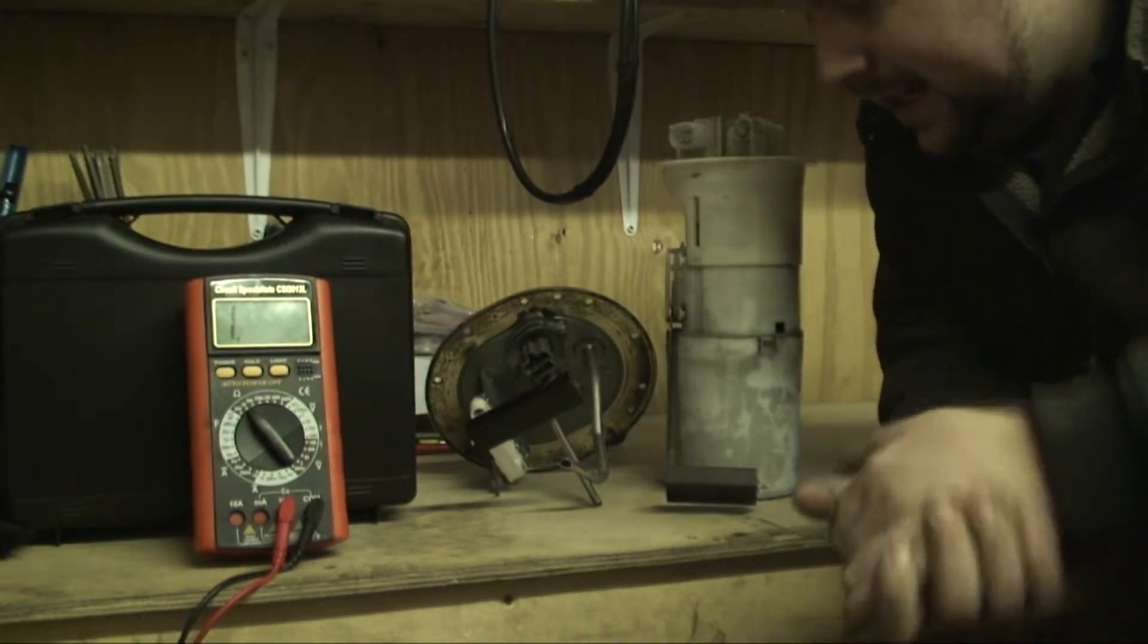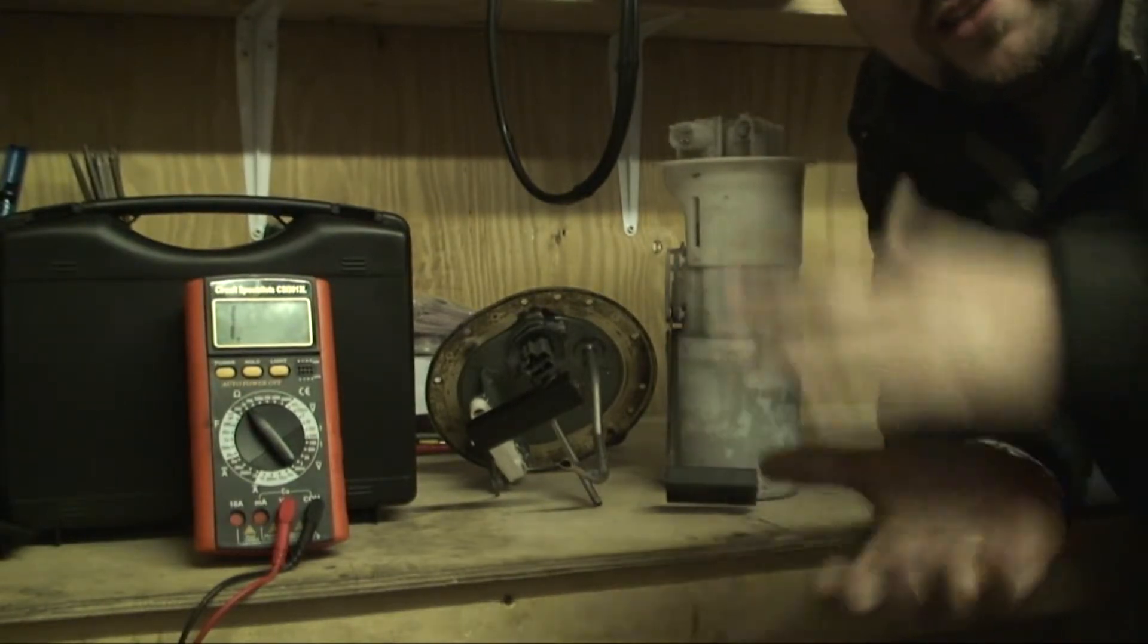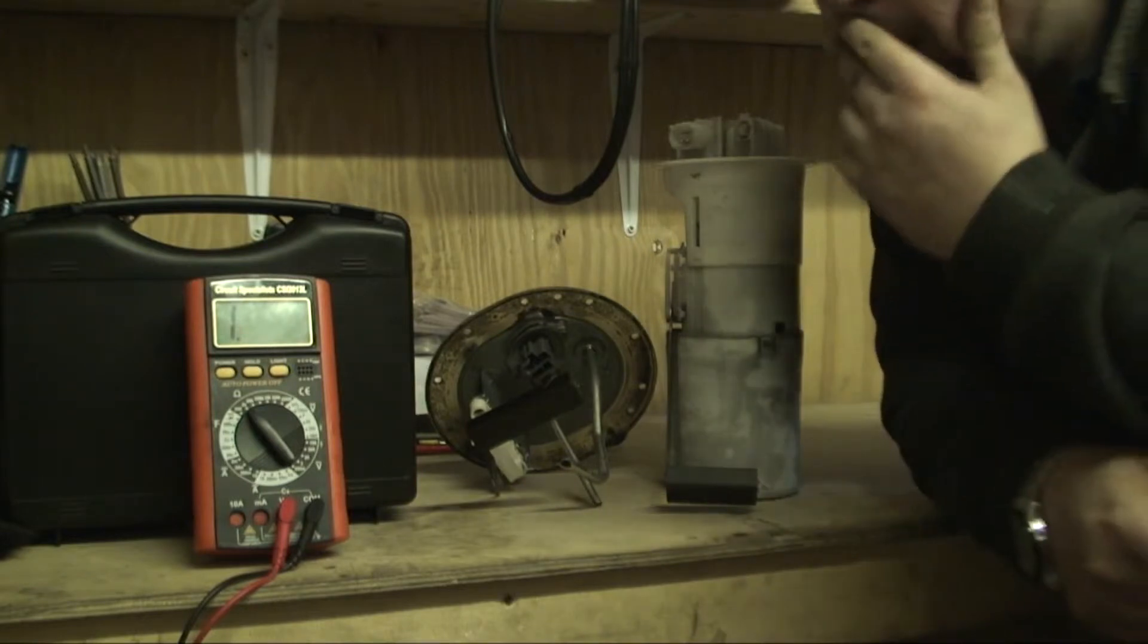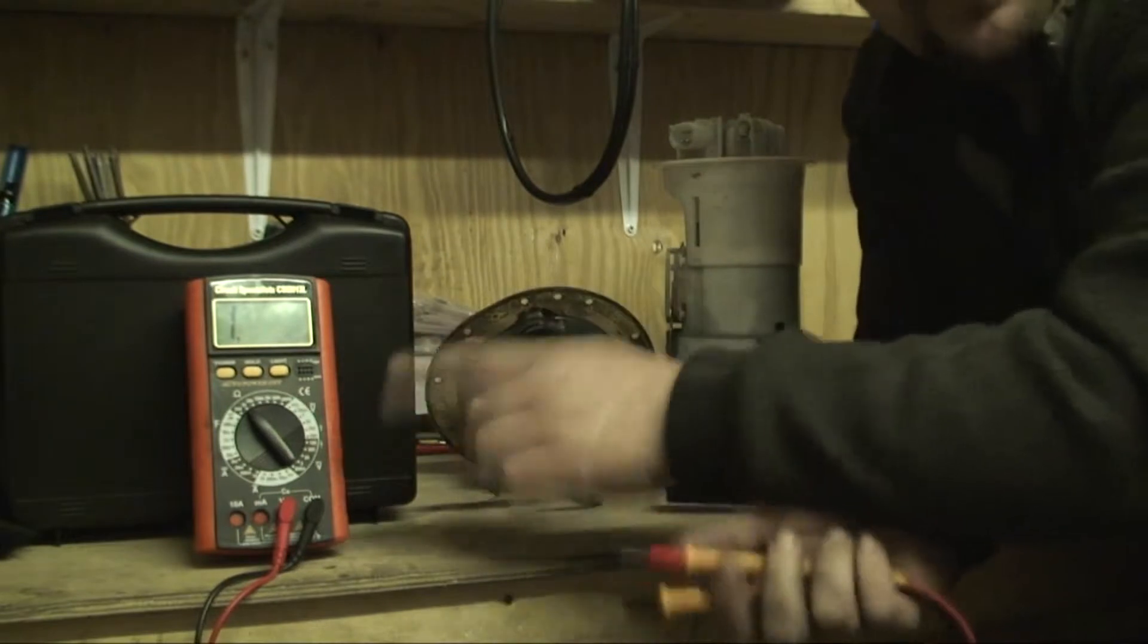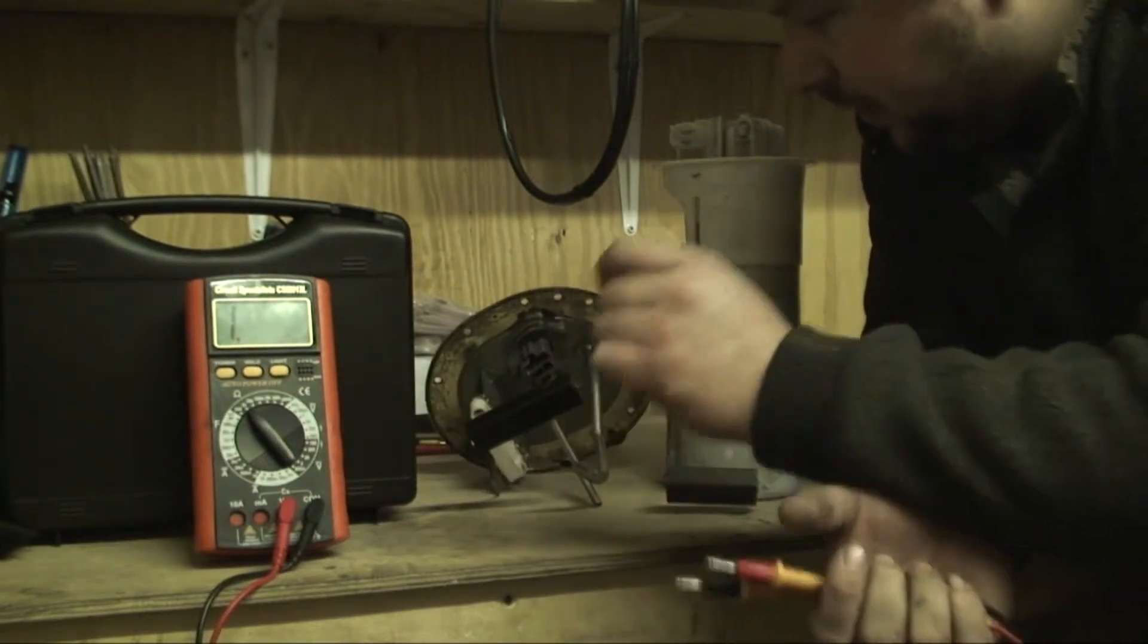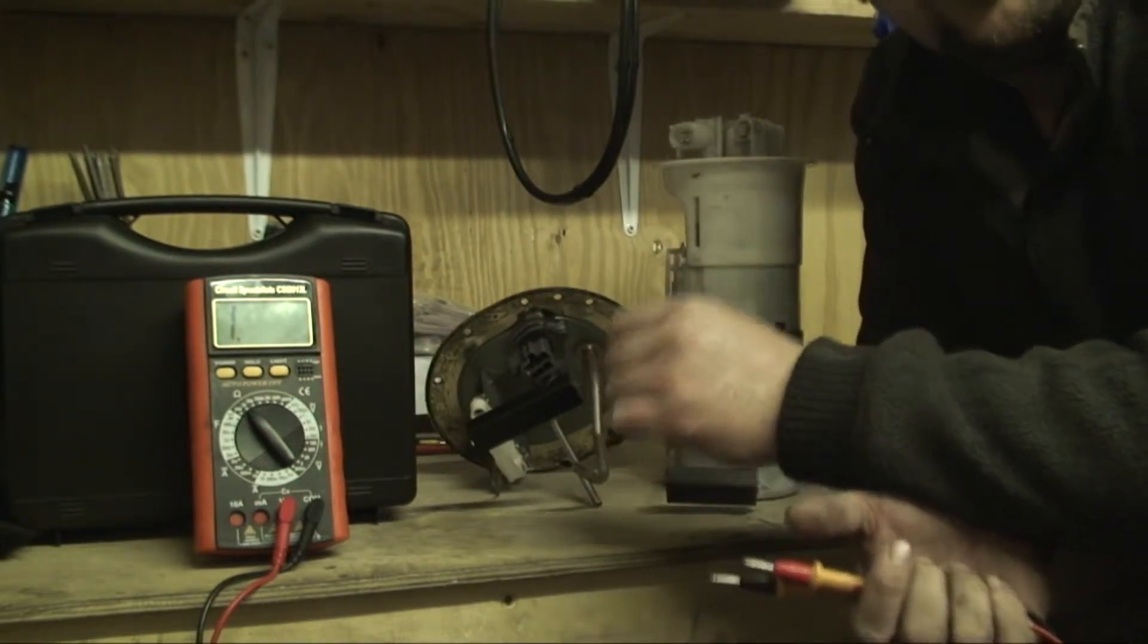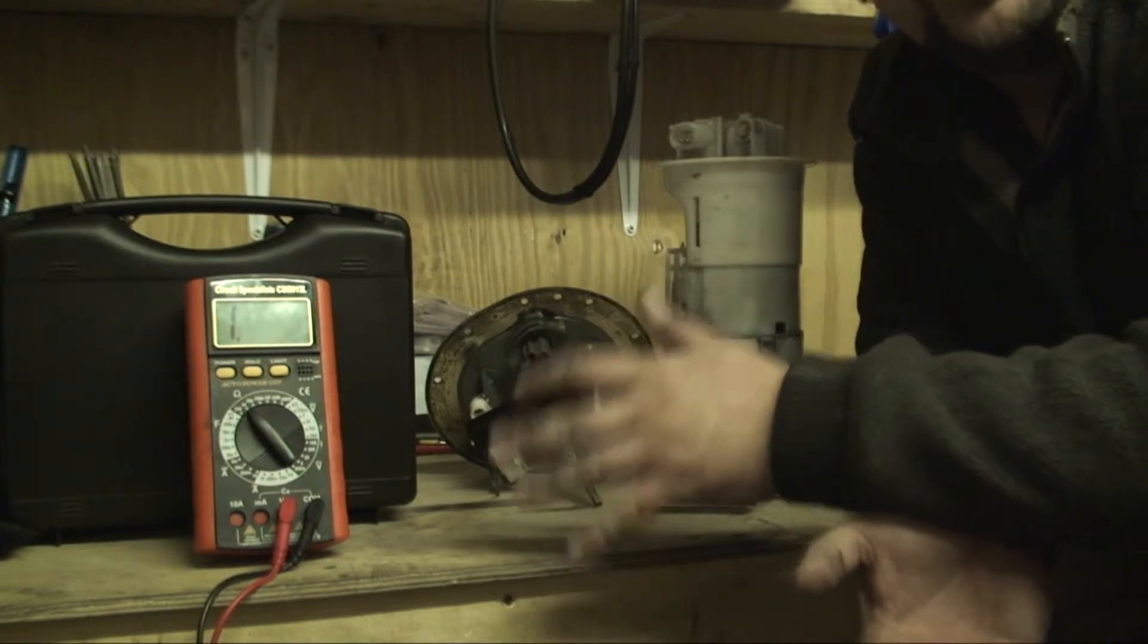The next easiest thing to do is check the sender unit and it's very simple. All you need is a multimeter. Now I have a very cheap multimeter here. You put it onto your ohm setting. Now what is important is you need to know what ohms your sender unit is and you can easily find that on the internet.